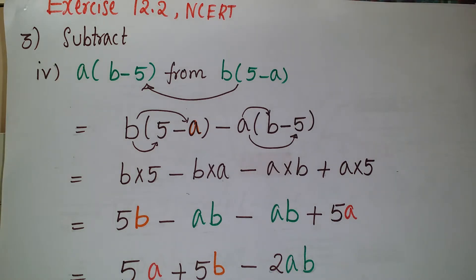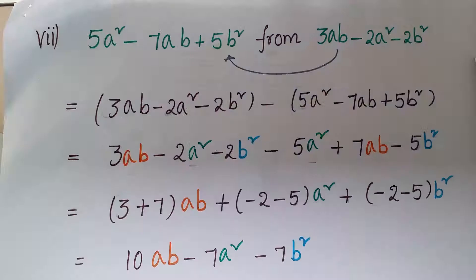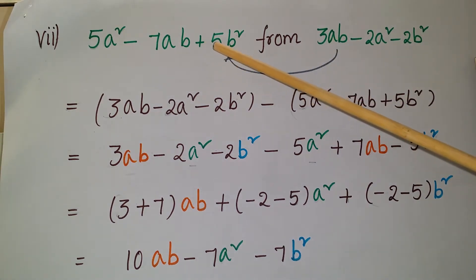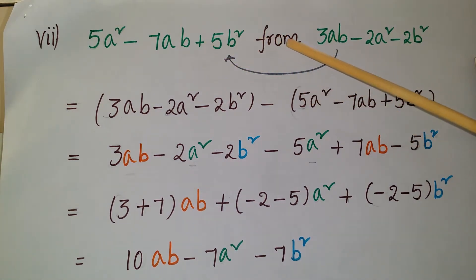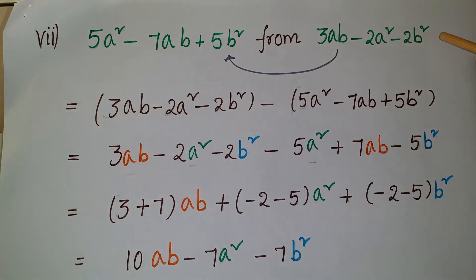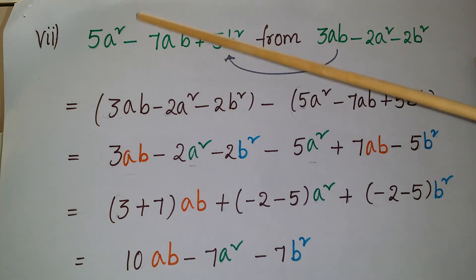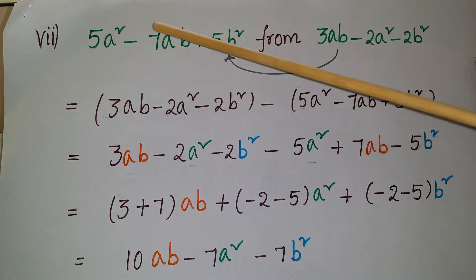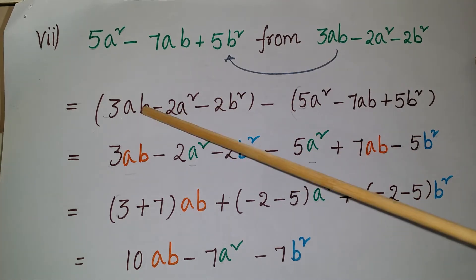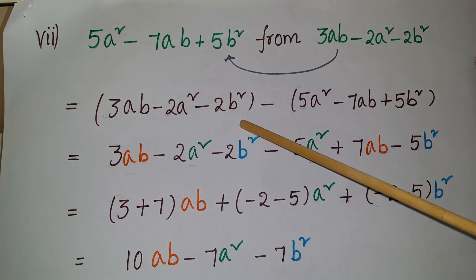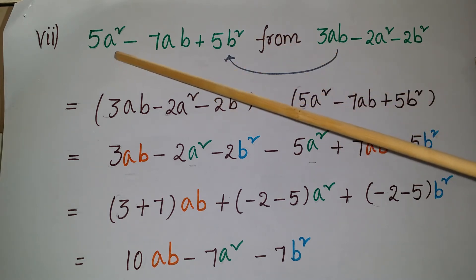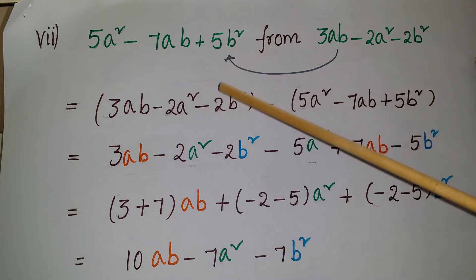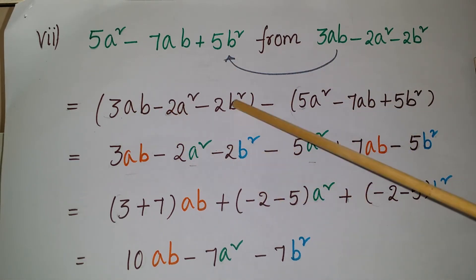So the answer is 5a plus 5b minus 2ab. Now the seventh problem: 5a squared minus 7ab plus 5b squared. We have to subtract from this expression to this expression, so we write 3ab minus 2a squared minus 2b squared, minus of 5a squared minus 7ab plus 5b squared.